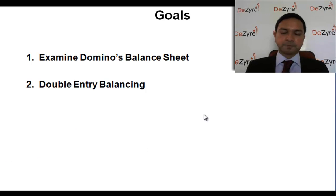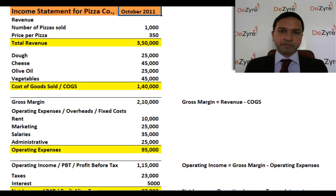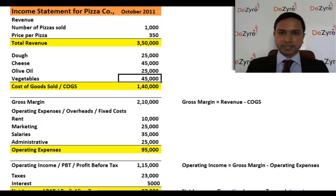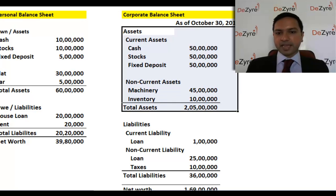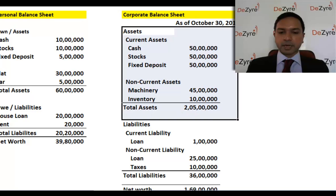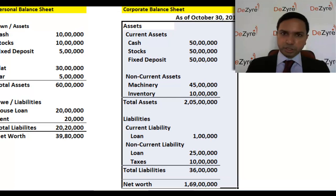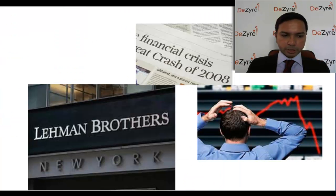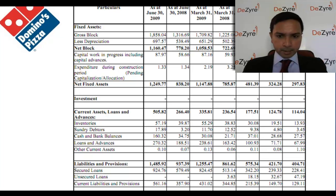Remember the income statement we built a few classes back — it talks about the operations of a company but doesn't really give you the financial situation, cash balances, and things like that. The balance sheet gives you the full financial snapshot of a company: cash, inventory, how much money the company owes others, and so forth. Here is Domino's real balance sheet — you're already noticing it looks nothing like the simple one we built last class, but it's not that different. Let's go through it.